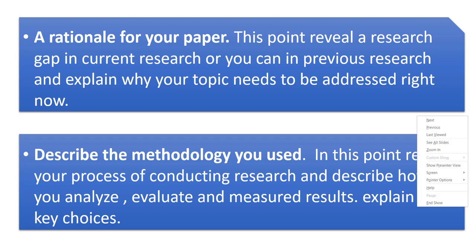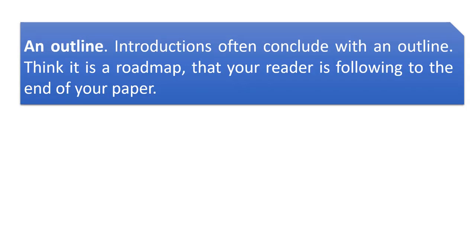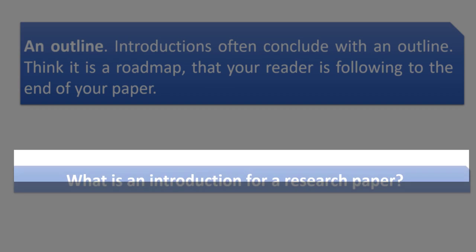The last point is an outline. A research paper introduction often concludes with an outline — basically a roadmap that takes your reader to the end of your paper, describing your whole journey. Outline is very important, but it mostly depends upon the field of your paper. For example, a physics or scientific research paper might emphasize methodology, while an English, conference, or literature journal article might highlight the overview.